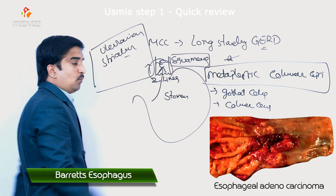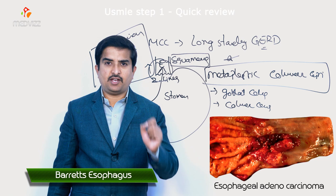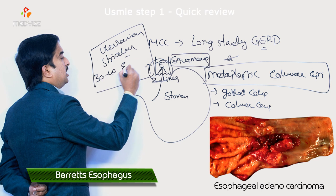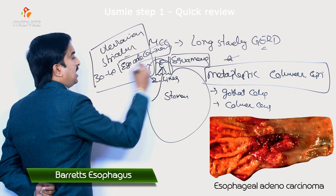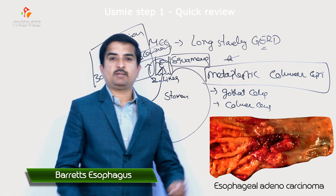The complications are extremely important. They include ulcers, stricture formation, and most significantly, the development of esophageal adenocarcinoma — there is a 30 to 40-fold increased risk of esophageal adenocarcinoma in Barrett's esophagus.